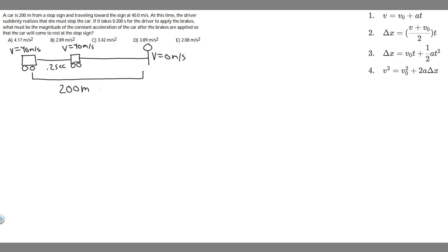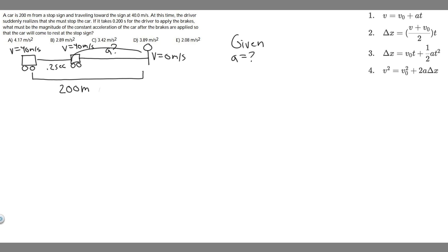So how do we want to solve this? We're trying to solve for the acceleration at the braking part. They're going to start decelerating right here, so what we want to find is acceleration, a. For a given interval in kinematics, you want to have three different variables. So what do we know about this braking interval? We know the initial velocity of this interval is 40 meters per second. The ending velocity is 0 meters per second.